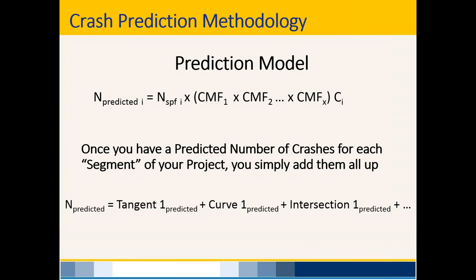Of course, each segment and each intersection may have different CMFs, so when you do the prediction model equation for each segment, you may or may not use the same CMFs — it depends on that specific segment. The math is not hard; there's just a lot of steps and things to keep track of. Take the calculations one at a time and don't rush. Jared likes to use the analogy: how do you eat an elephant? One bite at a time.